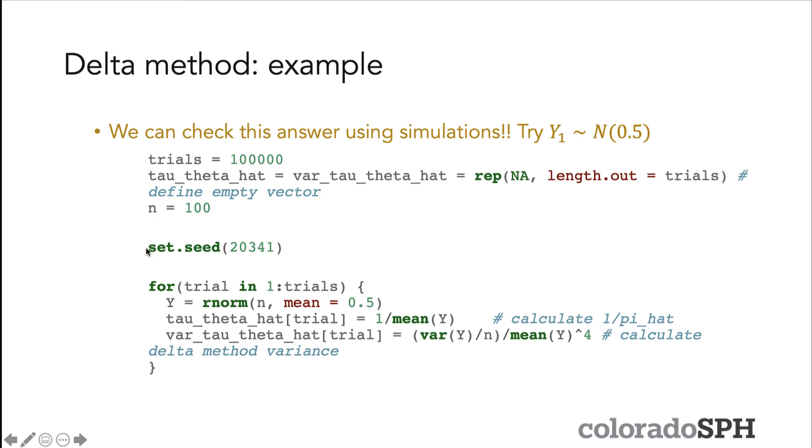First I set the seed to ensure that every time I run this I get the same results, even though I'm randomly selecting Y values each time. I run a for loop that does this 100,000 times—100,000 trials each of size 100. In each trial, I randomly sample 100 values from a normal distribution with mean of 0.5. Then I take all the values from that sample, calculate the mean, and then take one over the mean, which gives us our τ(Ȳ), our estimated transformed Ȳ variable.